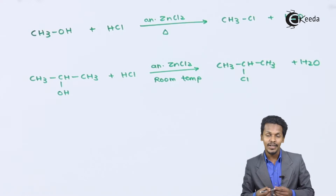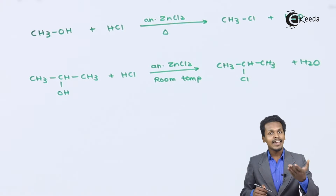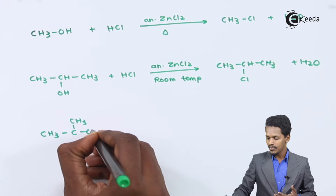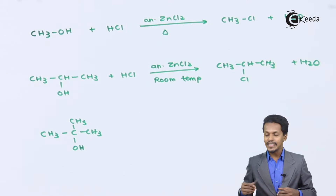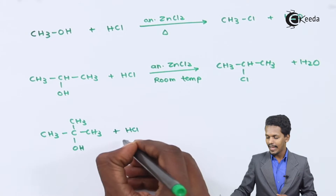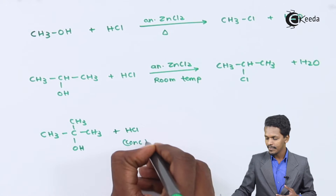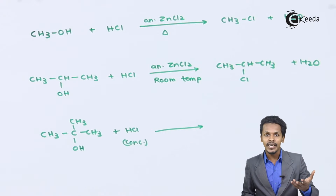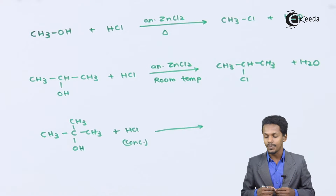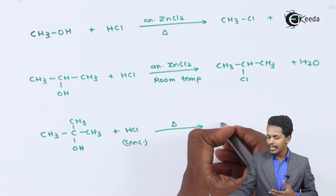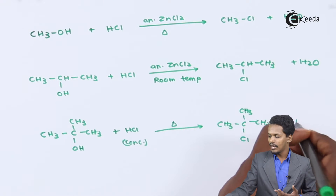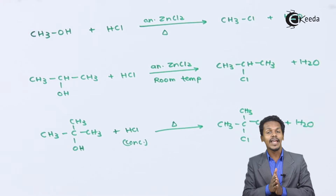The conditions differ but the catalyst ZnCl2 is still used. For a tertiary alcohol, such as tertiary butyl alcohol reacting with concentrated HCl, this reaction does not require any catalyst. The three methyl groups have a very positive inductive effect, making the substitution reaction much easier. That is why we don't need Lucas reagent, and the product is tertiary butyl chloride along with water as a byproduct.